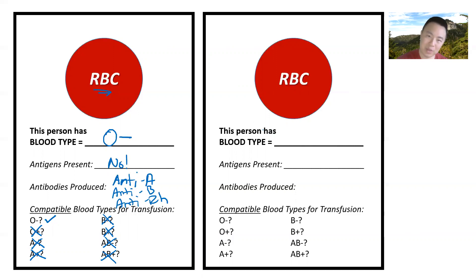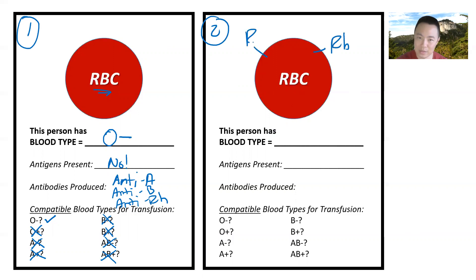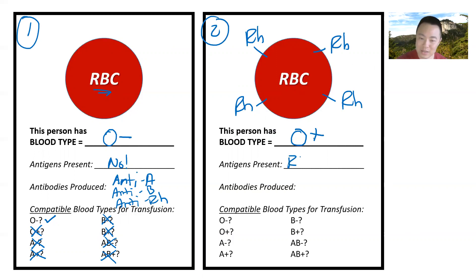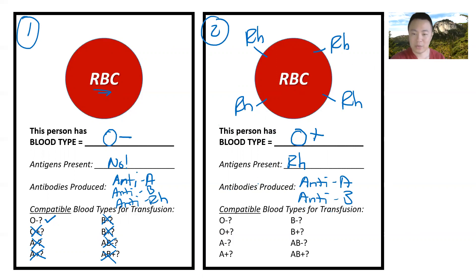Case number two: I've got a red blood cell that has RH on it and nothing else. Since it doesn't have A or B, this is blood type O, but it does have RH, so it's O positive. The antigens present is just RH. The antibodies produced: I don't see the letter A, so it produces anti-A; and I don't see the letter B, so it's anti-B. Anytime I see the letter A or B, it won't like it. Is it compatible with O negative? For sure — no problem. O positive? This cell already has RH, so it's okay. A negative? It doesn't like the letter A — no good.